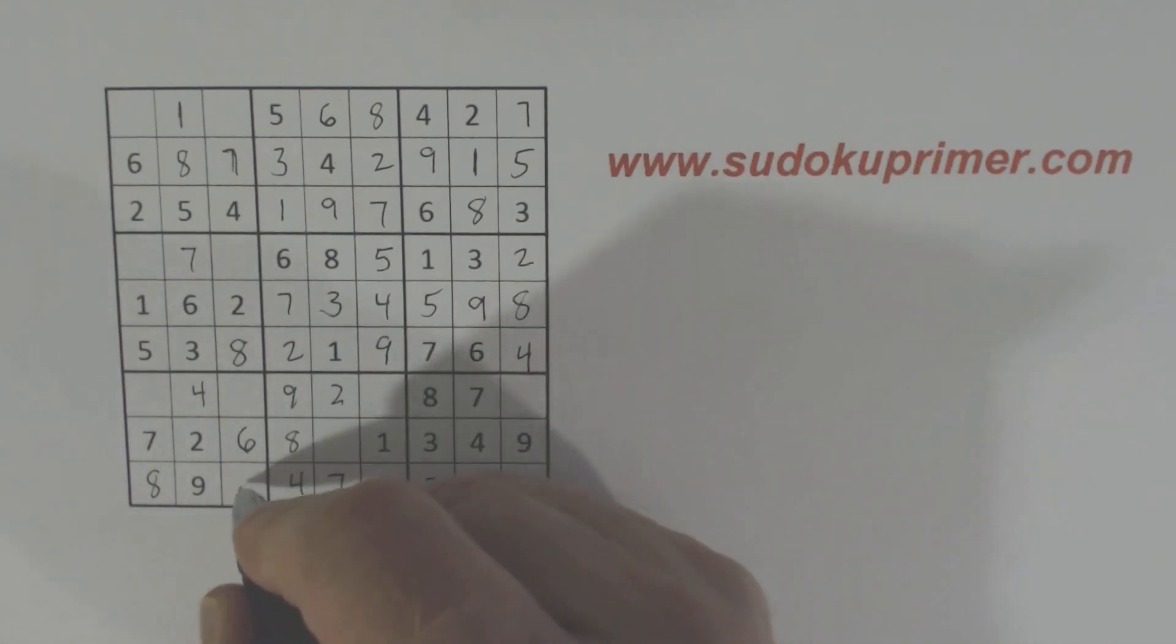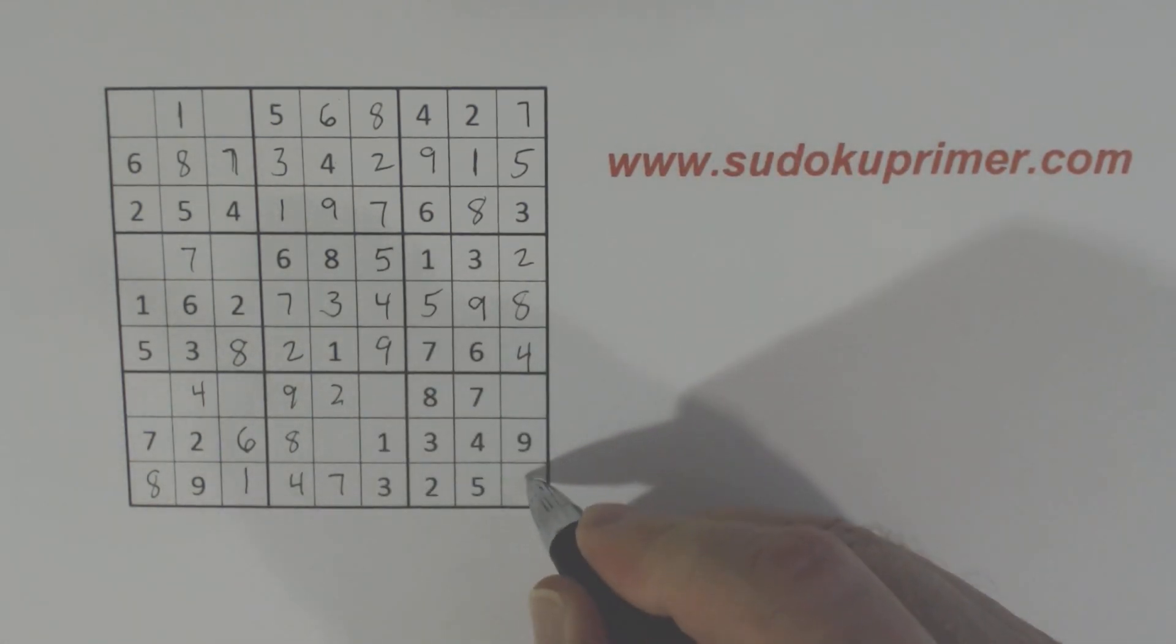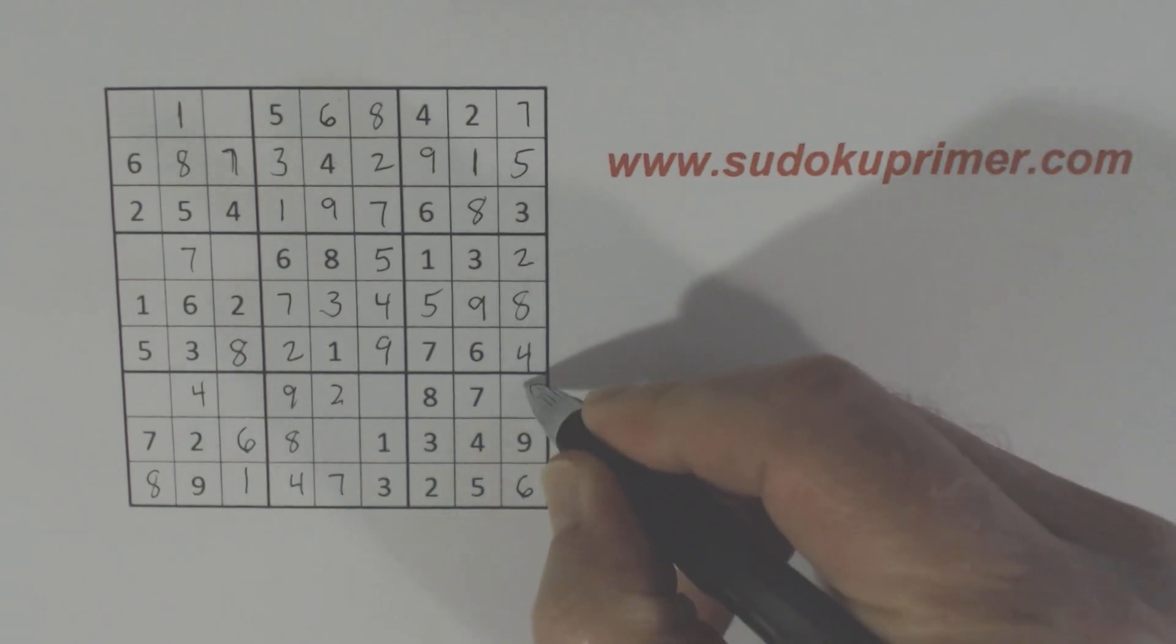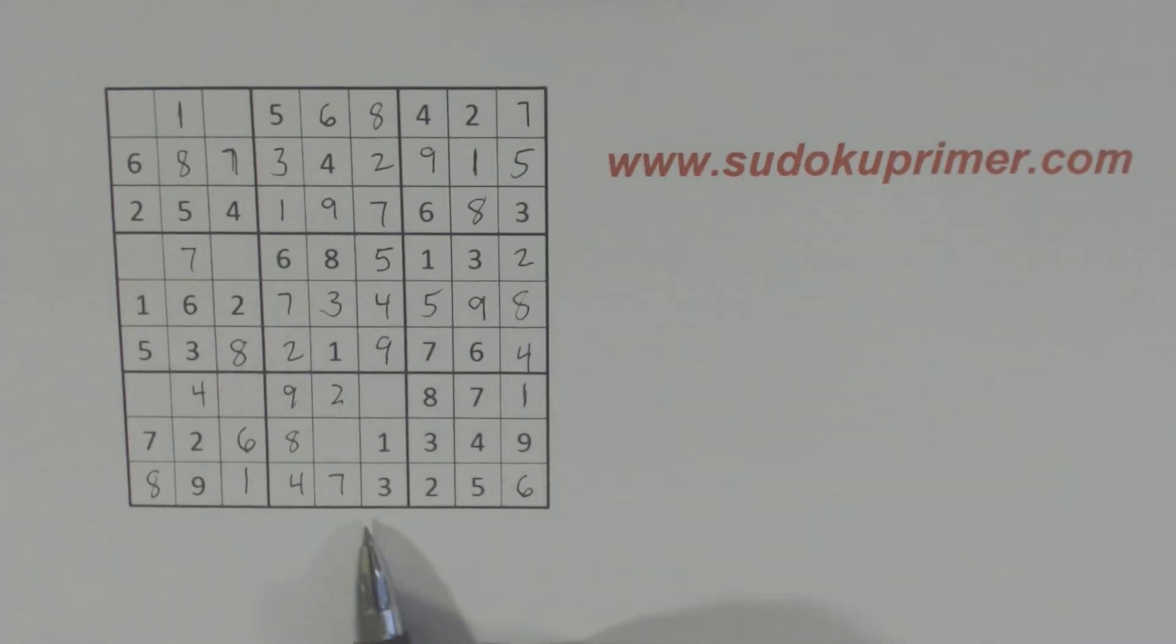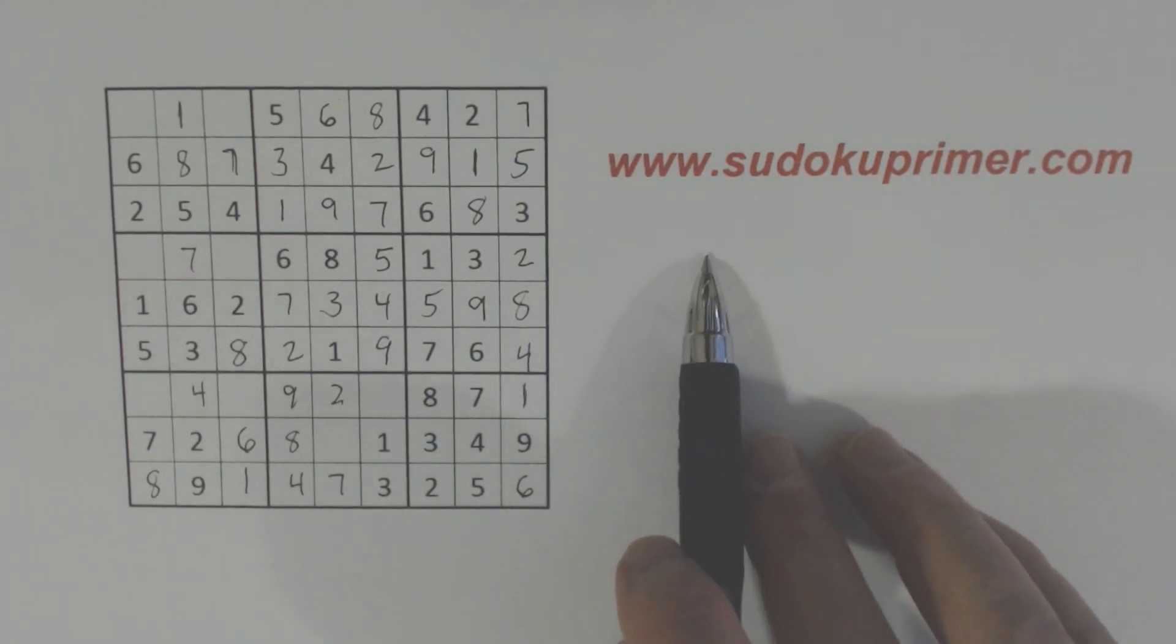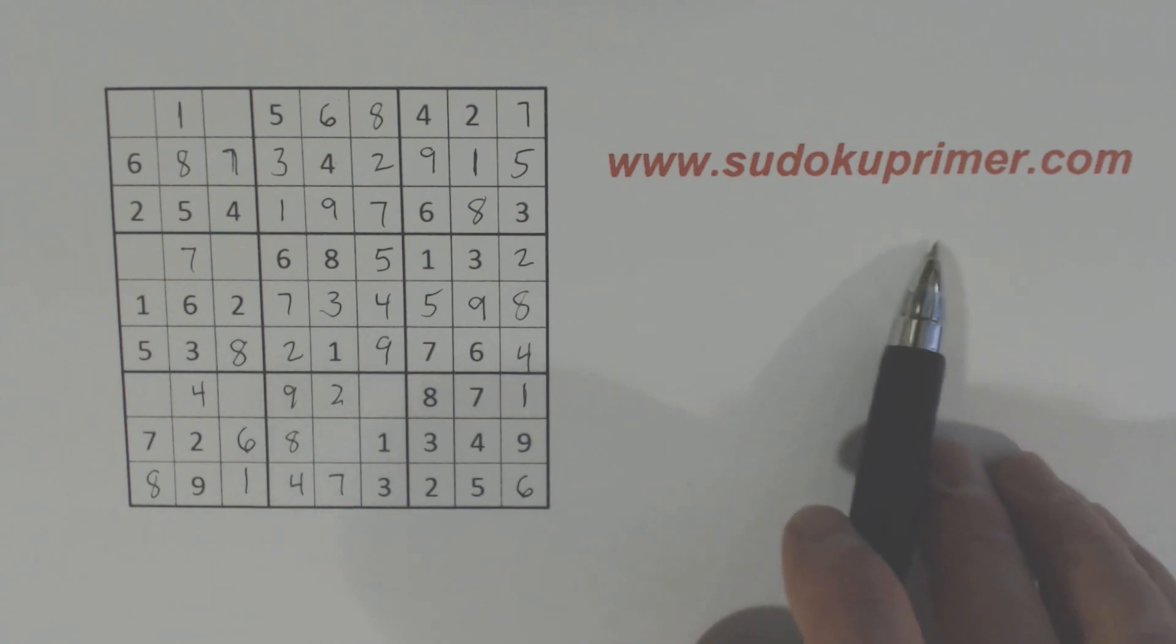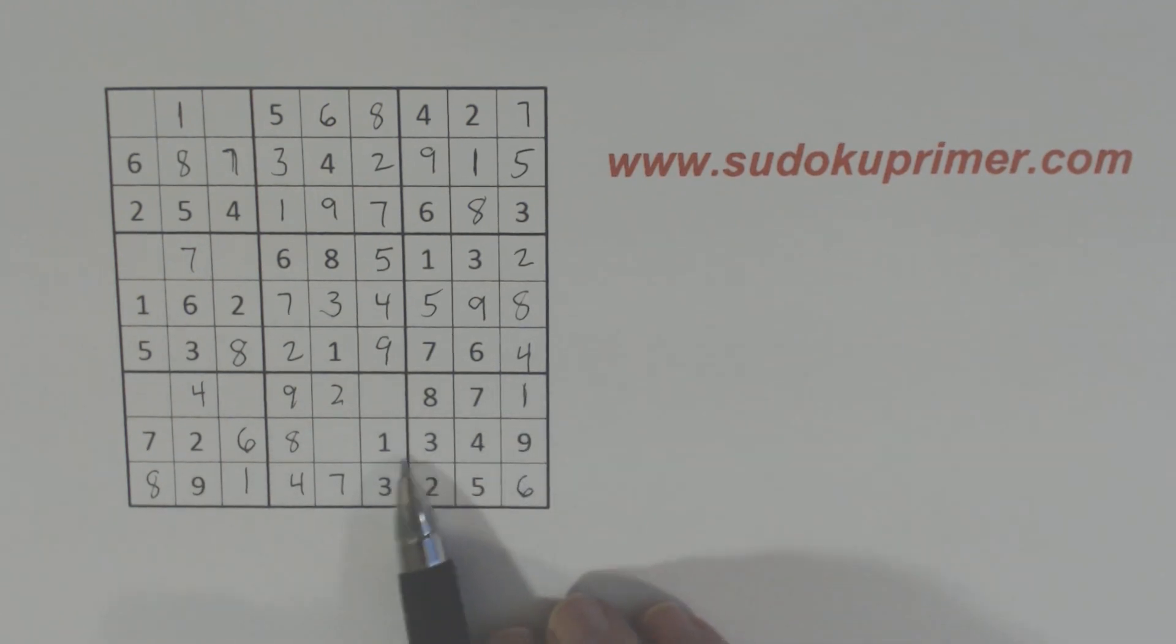Okay. Now that has to be a 1 because it's part of these 1-6 twins here. And we can fill that in. Now, if you're not familiar with the ambiguity rule, I'd highly recommend going to sudokuprimer.com and studying up on that technique. Because it's very powerful and you can use it in very complicated puzzles. And it's very useful.